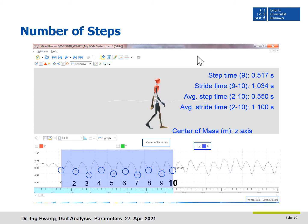The first step time was excluded because it can cause errors. Even if there is a valley, it may not be a heel strike, and we don't know when the first step starts using this graph.